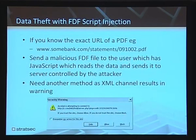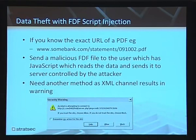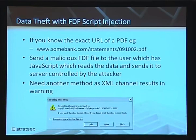Adobe has a thing called Enhanced Security. If you enable Enhanced Security it prevents FDF injection, but it's not enabled by default. So you can inject script into a PDF — but so what? You don't have the browser cookie. One thing you could possibly do, if you know the exact URL of a PDF, is steal the contents of that PDF by sending an FDF that has the target PDF, a script that gathers content, and sends it off elsewhere. But when I tried it, the XML channel resulted in a warning to the user. If there was another channel — like DNS exfiltration — you could probably get the data out.